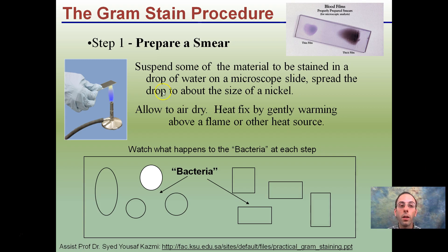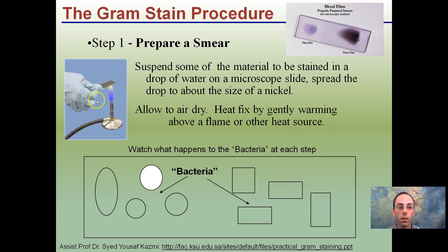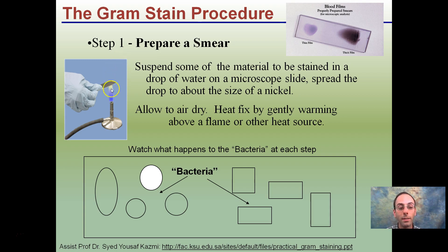Step one of the gram staining procedure: prepare the smear. You take your bacteria and smear them on a slide. Suspend some material in a drop of water on a microscope slide, spread it about the size of a nickel, allow it to air dry, and then heat fix by gently warming it above a flame or heat source. This fixes the bacteria — sticking them to the slide. This fixing procedure not only denatures them but allows them to stick. You want to make the smear as thin as possible; if it's too thick it won't work well.